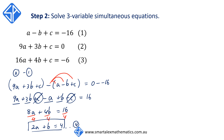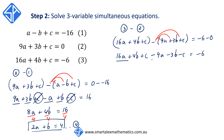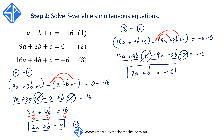Doing the same for equation 3 minus equation 2: 16a plus 4b plus c minus 9a plus 3b plus c equals minus 6 minus 0. Expanding the bracket, minus 9a minus 3b minus c, collecting like terms: 7a plus b is equal to negative 6. This is equation 5, also independent of the variable c.